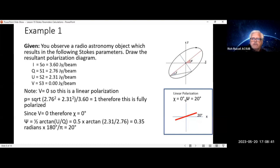You see on the polarization diagram, if chi equals 0, that means it's now a straight line. There is no width to the ellipse. Psi equals 0.5 arctan U over Q. If you work out those values, you get 0.35 radians.